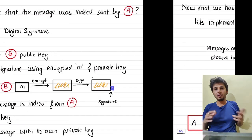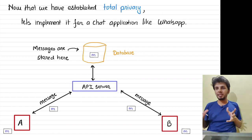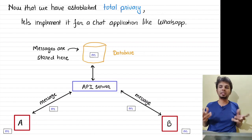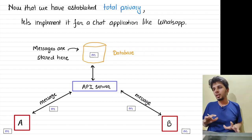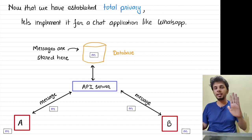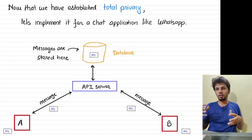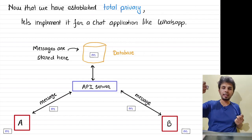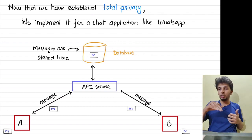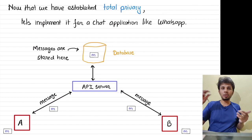Now we've established total privacy. Let's see how it fits into a chat application like WhatsApp. Without any encryption, the flow is: A has a raw message M and sends it over an insecure channel to the API server. The WhatsApp API takes that message, stores it in the database, and forwards it to B. Along this entire path, the message is nowhere encrypted, and even in the database the raw text is stored.